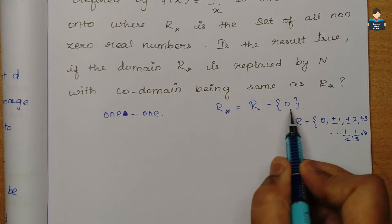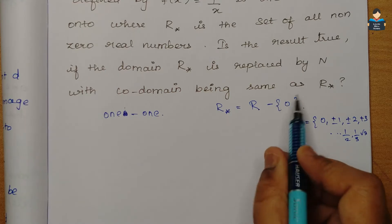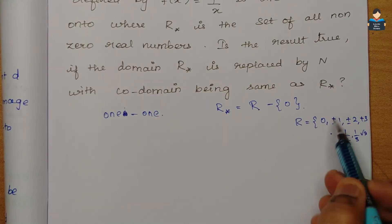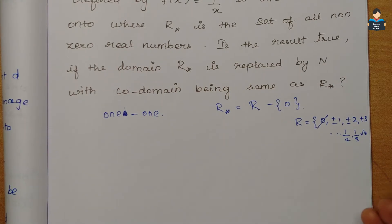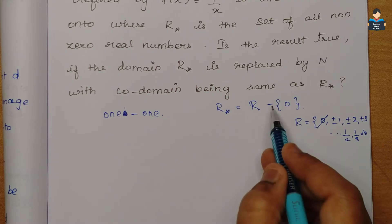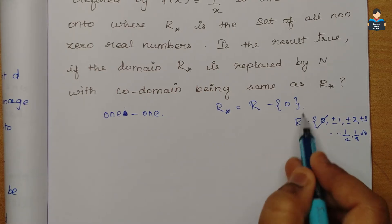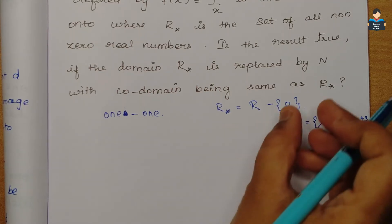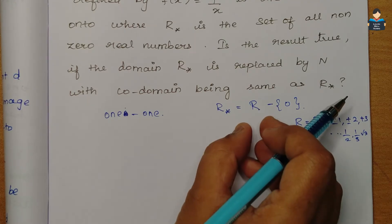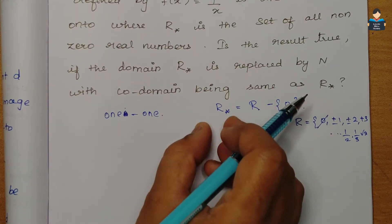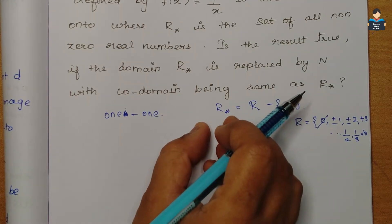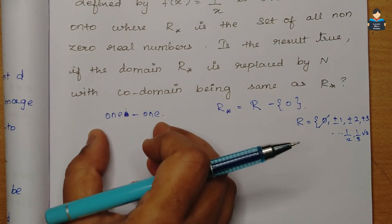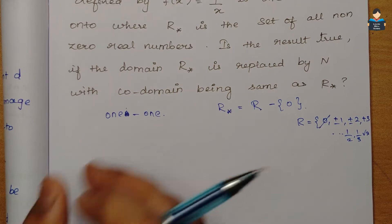R* means all non-zero real numbers — so zero is excluded. All values in R* are real numbers excluding zero. First, we will prove the 1-to-1 function.